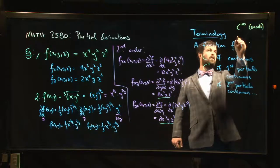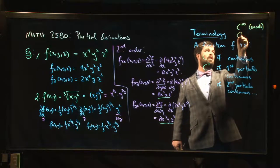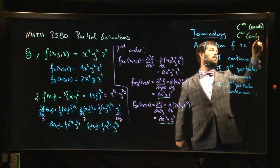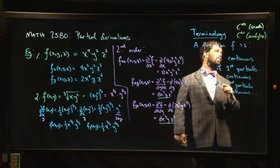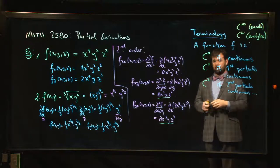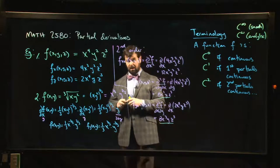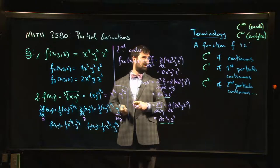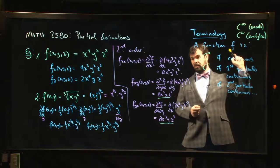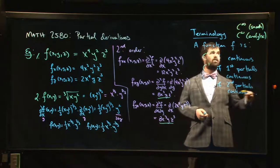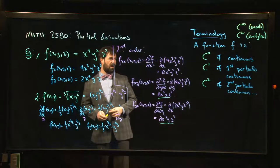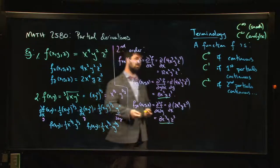There's also something called C-omega, which stands for analytic. C-omega means the function is equal to its Taylor series expansion. You may have seen in Calculus examples of a function which is smooth but does not equal its Taylor series expansion — there are a few such examples; they're not that common but they exist. So analytic is actually a stronger condition than smooth.